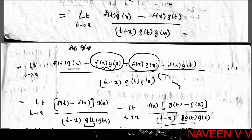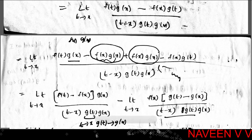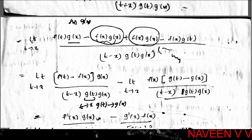We subtract and add f(x)·g(x) in the numerator: [f(t)·g(x) - f(x)·g(x) + f(x)·g(x) - f(x)·g(t)] all divided by (t - x)·g(t)·g(x). Combining the first and second terms with g(x), and the third and fourth terms with f(x): [(f(t) - f(x))·g(x) - f(x)·(g(t) - g(x))] / [(t - x)·g(t)·g(x)].